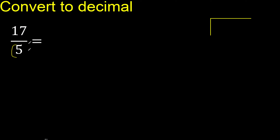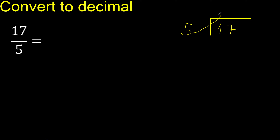17 divided by 5. 17 is not less, therefore 5 multiplied by which number is nearest to 17 but not greater? Multiply by 4 is 20 — 20 is greater.